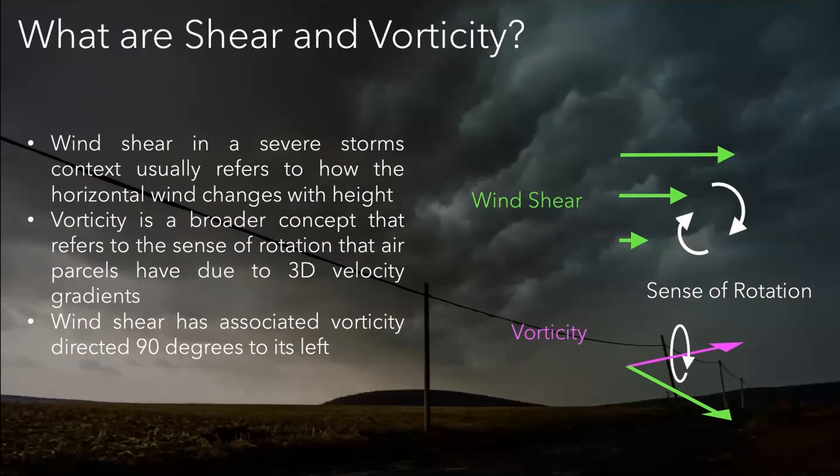Vorticity is a broader concept that refers to that microscopic sense of rotation that air parcels have due to gradients in the velocity field. Wind shear has an associated vorticity vector that's directed 90 degrees to its left.